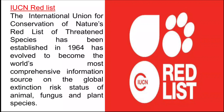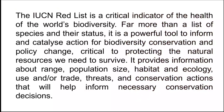The IUCN Red List contains a list of threatened species and was established in 1964. It has evolved to become the world's most comprehensive information source on the global extinction risk and status of animal, fungus and plant species.